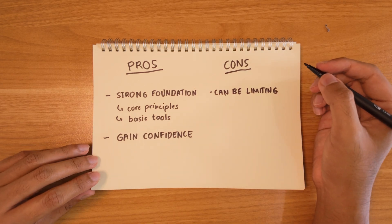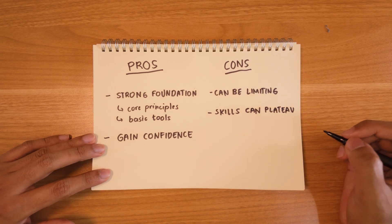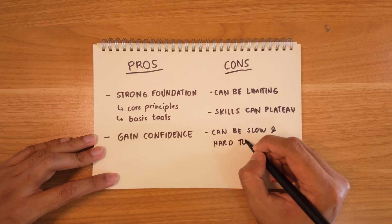Now let's talk about the cons of forward learning. One downside is that you are limited to the creator's intended output. If you want to specialize in a very particular style and there are limited resources related to that topic, it can feel very limiting. Also, if you take the same easy classes over and over again, your skills can plateau and feel very stagnant. We are wired to get instant gratification, so following a tutorial can feel slow and hard to sustain. The mindset for forward learning should really be about enjoying the process and realizing it's more of a journey.